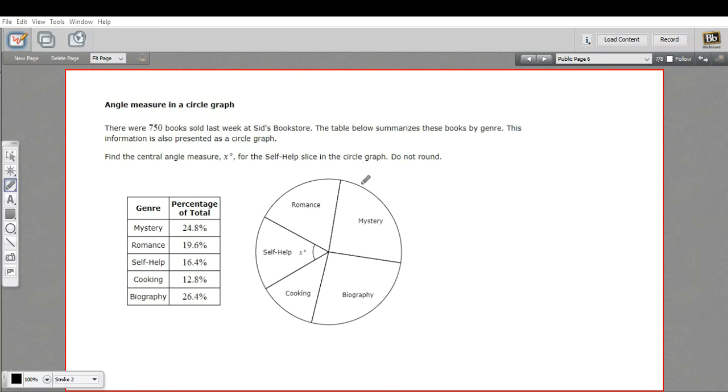Here we have a couple of problems about angle measures in circle graphs. In this first one, we have a list of genres of books sold in a bookstore, and they've broken them down by the percent of the total sales,